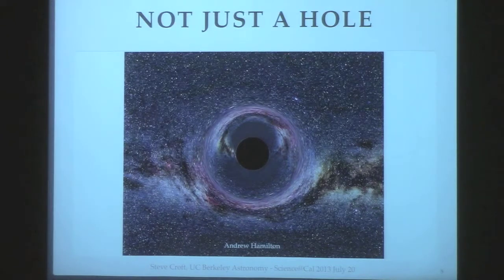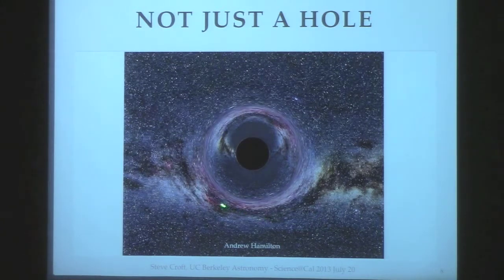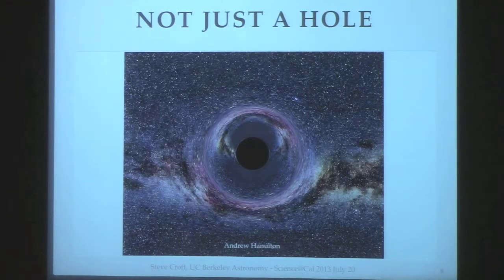This is a real picture of the Milky Way in the background, but the black hole is a simulation of what it would do to the background — warping spacetime around it. It's a 3D thing in space; it's not a flat disk. You can write down the equations of the spacetime basically, and move around it and see similar kinds of things.